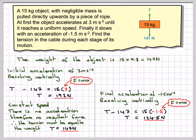Here we've looked at an object at three different stages. When you pull it up initially, you accelerate, reach a constant velocity, and then you finally slow down. Notice that the tension in the string is going to be different in all three cases.